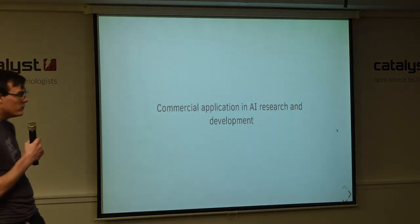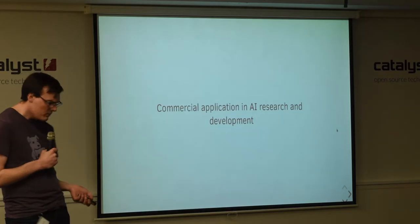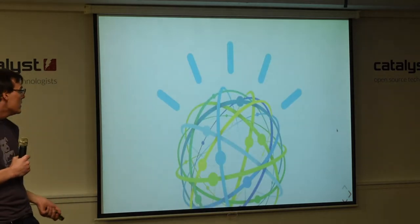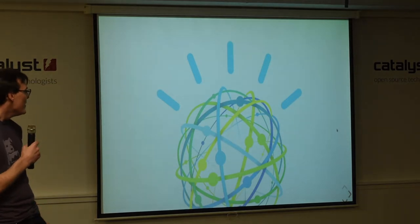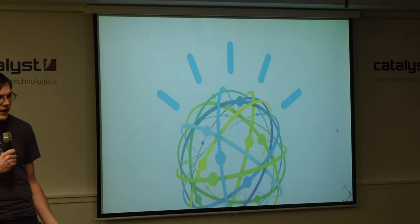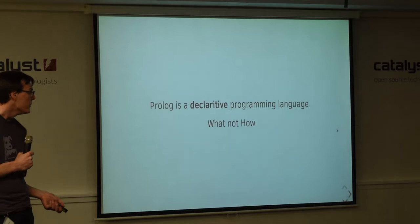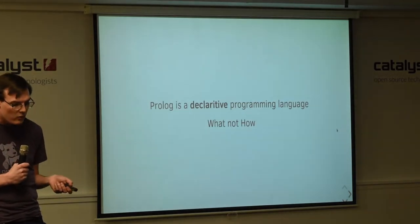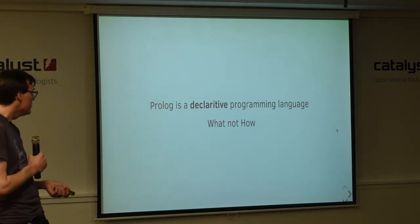Prolog today is still relevant. It has commercial application in AI research and development. Wow, that picture is really big. Namely, it's used by IBM in their Watson AI computer. IBM uses it for natural language processing as that's what it's designed for.